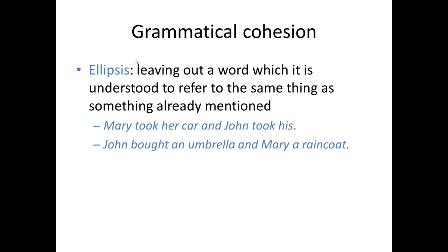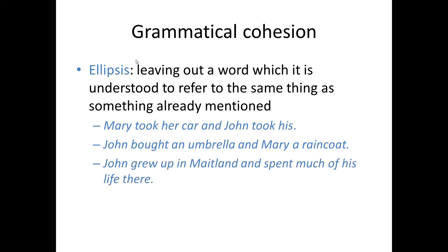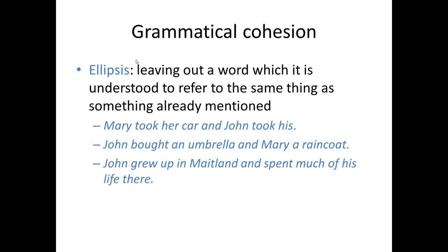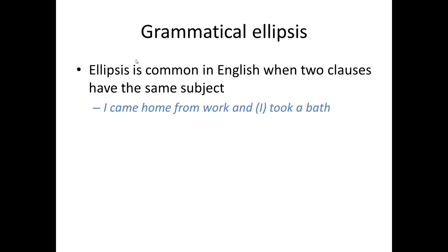We also see ellipsis in an example we've already looked at: 'John grew up in Maitland and spent much of his life there.' Who spent much of his life there? John did. We could have had 'he' in the subject position of the second clause — 'John grew up in Maitland and he spent much of his life there' — but instead the subject has been left out altogether, leaving us to infer that it's the same as the subject of the first clause. We can use ellipsis when two clauses have the same subject, and in fact this is very common in English.